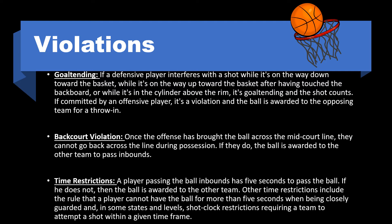Time restrictions: a player passing the ball inbounds has five seconds to pass the ball; if not, the ball is awarded to the other team. Other time restrictions include the rule that a player cannot have the ball for more than five seconds when being closely guarded, and in some states and levels, shot clock restrictions require a team to attempt a shot within a given time frame.